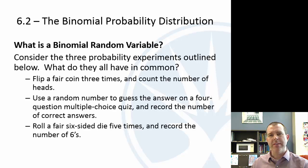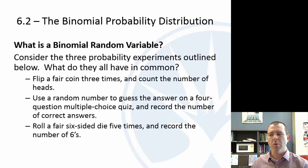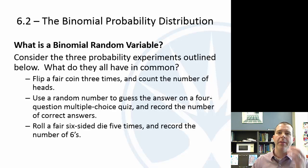What we're doing is counting the number of times something happens. Either it does or it doesn't happen — either it's heads or tails, either we're right or wrong, either it's a six or it's not a six. That's the binomial idea: it's one or the other.